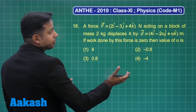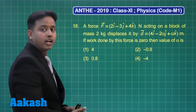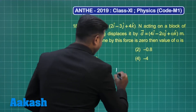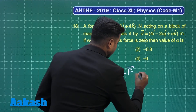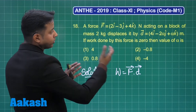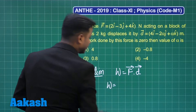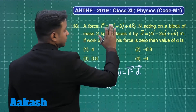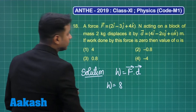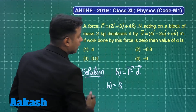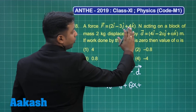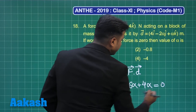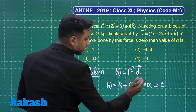This is straightforward since the vector forms of force and displacement are given. Work done is the dot product of force with displacement. Taking the dot product: the i-components give 2×4 = 8; then −3 multiplied by −2α gives +6α; and 4 multiplied by α gives 4α. Setting the total equal to 0: 8 + 10α = 0.